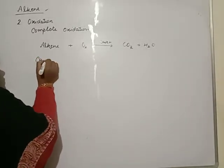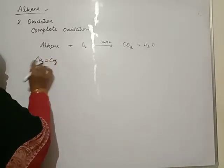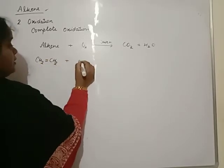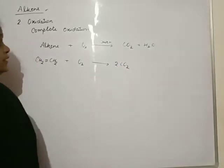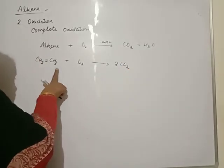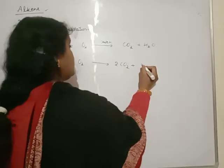Suppose you have ethene. How many carbons? We have two carbons. It will oxidize to give two moles of carbon dioxide. Then how many hydrogens? Two moles of water.